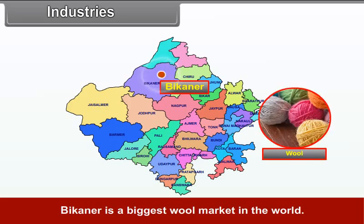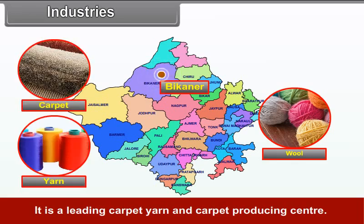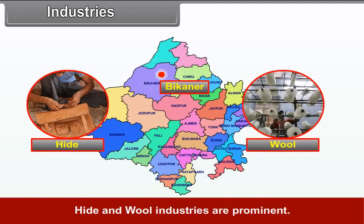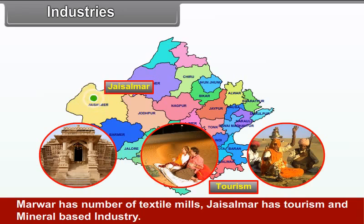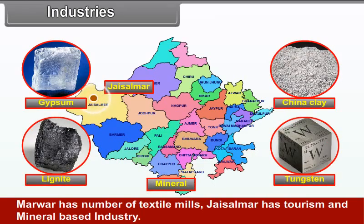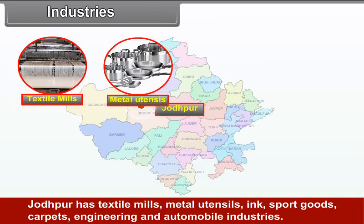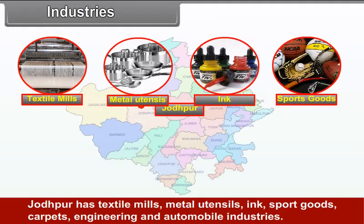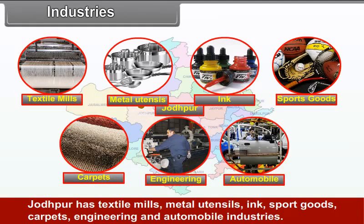Industries. Bikaner is the biggest wool market in the world and a leading carpet yarn and carpet producing center. Hide and wool industries are prominent. Marwar has a number of textile mills. Jaisalmer has tourism and mineral-based industry. Jodhpur has textile mills, metal utensils, ink, sports goods, carpets, engineering and automobile industry.